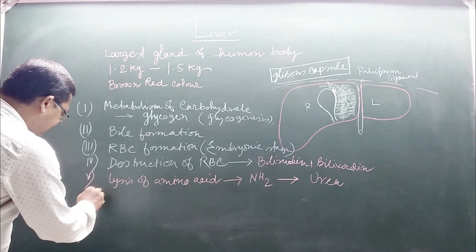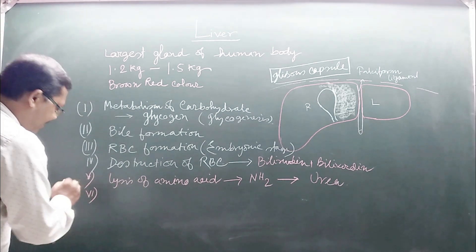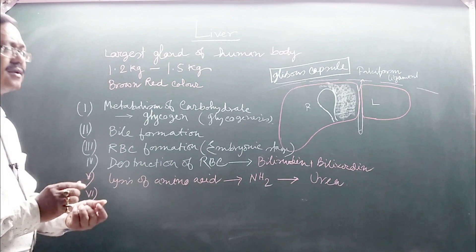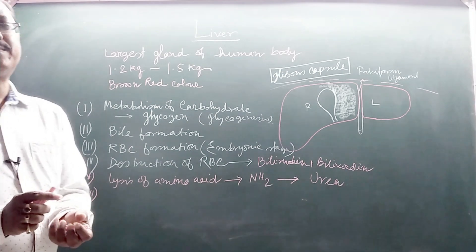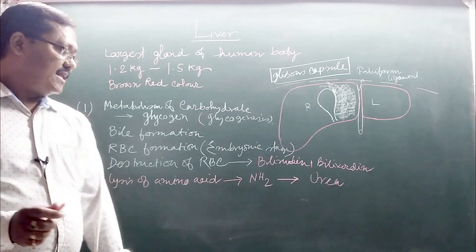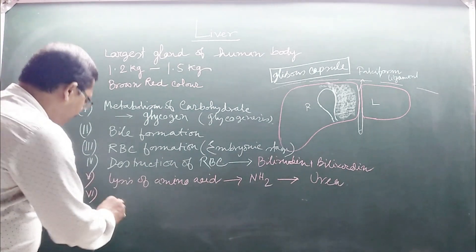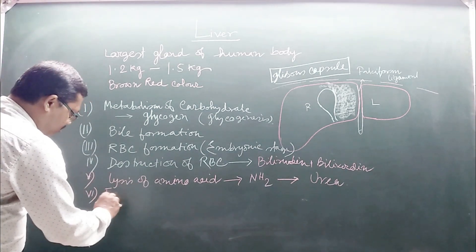The sixth important function is the synthesis of major proteins such as fibrinogen, prothrombin, heparin, and angiotensinogen.